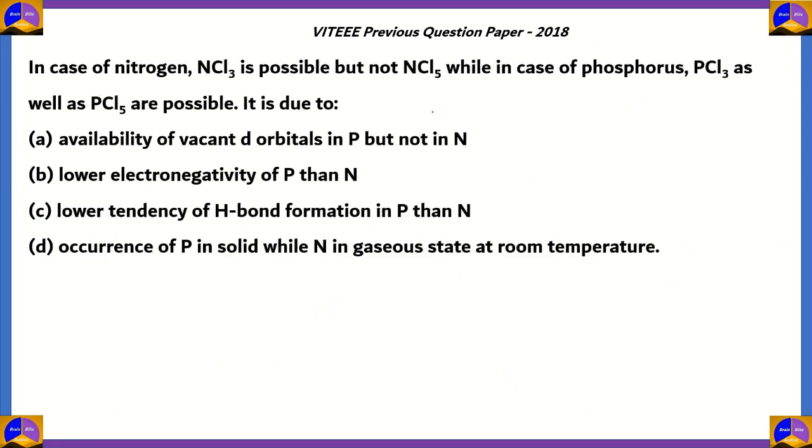Now let's look at another question. In the case of nitrogen, nitrogen trichloride is possible but not nitrogen pentachloride, while in the case of phosphorus, PCl₃ (phosphorus trichloride) as well as phosphorus pentachloride are possible. What is the reason for this anomaly?